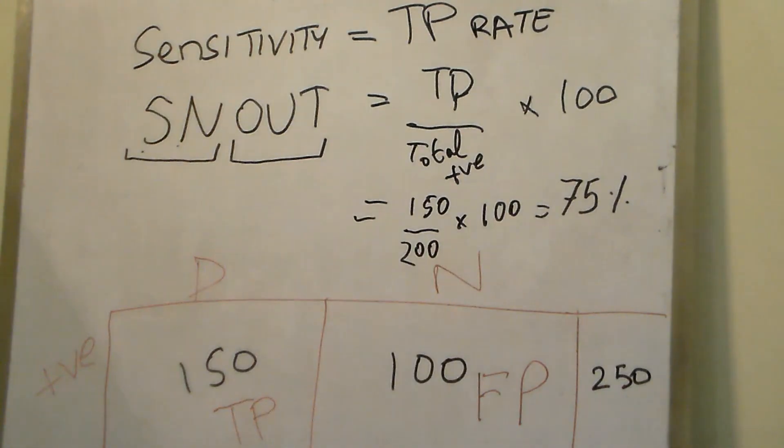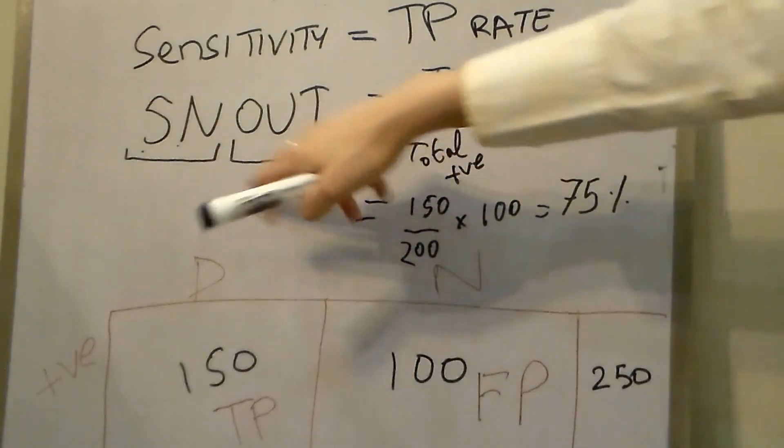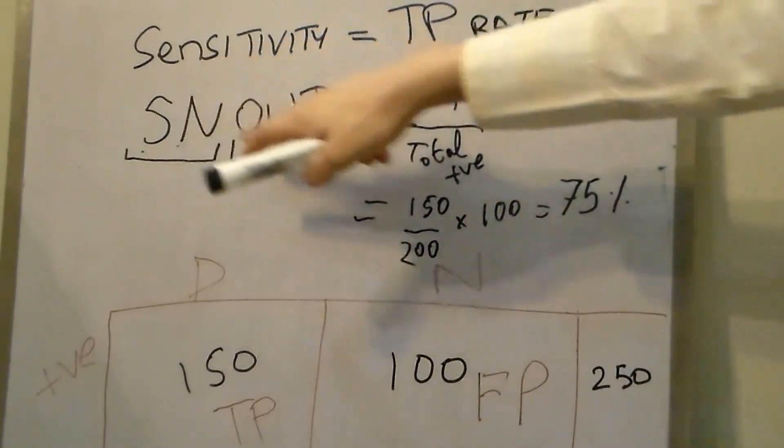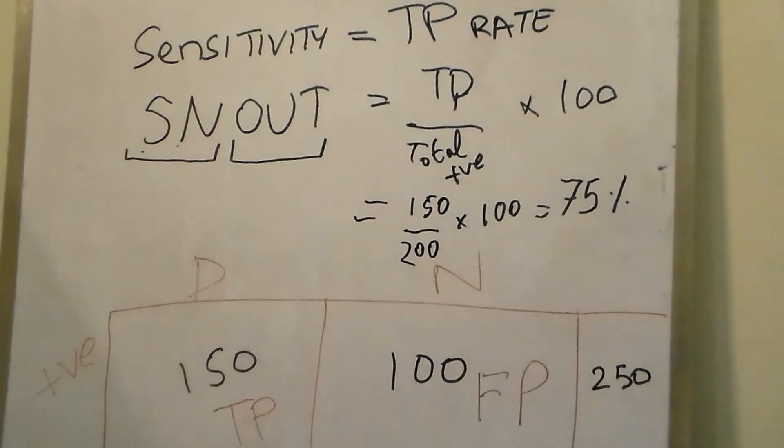A mnemonic for this given in First Aid is SNOUT. 'Sn' is for sensitivity and 'out' means it rules out. So if a test with high sensitivity says you tested negative for the disease, then you are most probably negative for that disease.